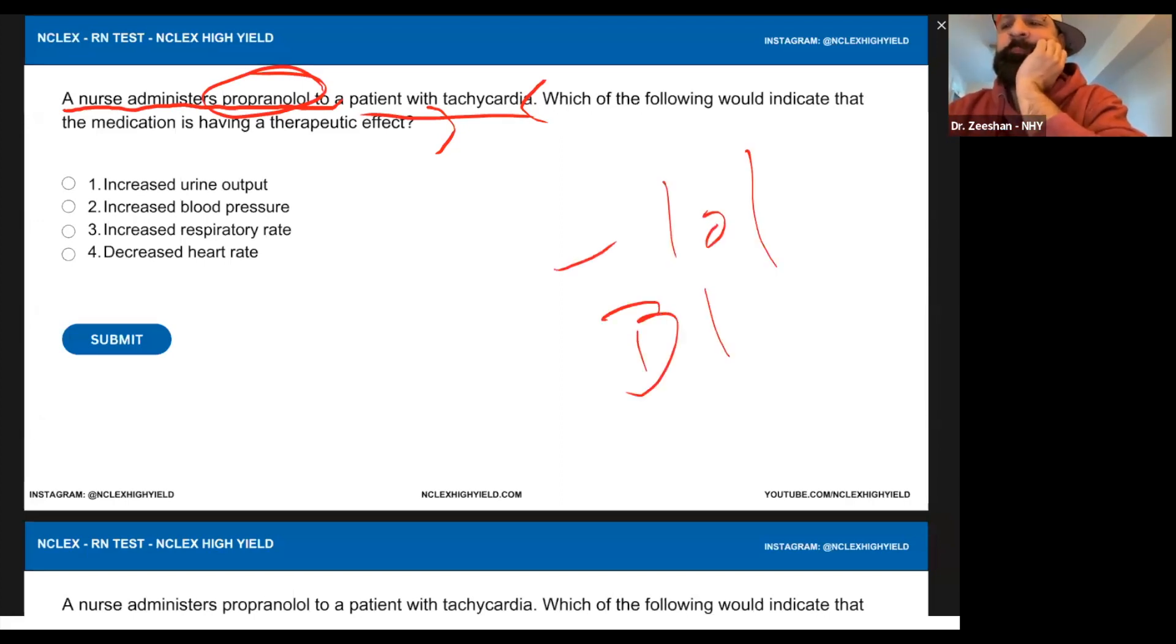It's a beta blocker, good. The beta blocker is used to do what? There's two reasons why we give a beta blocker. Lower heart rate and lower blood pressure, good.